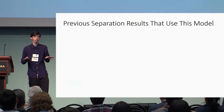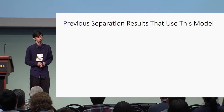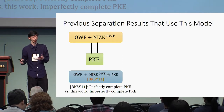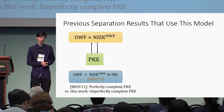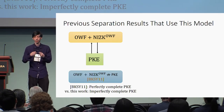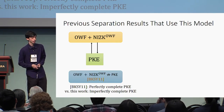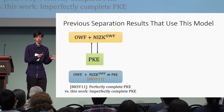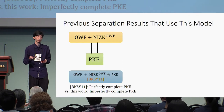Before going into the proof ideas, I'll go over some previous separation results that use this method. This model was introduced by Bukersky et al. when they showed there exists no PKE construction from one-way function plus NIZK, where the NIZK could accept statements that have one-way function calls within them. The difference between their result and ours is that their result only rules out perfectly complete PKE, whereas we extend the result to rule out even imperfectly complete PKE.